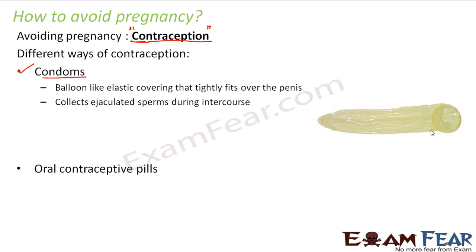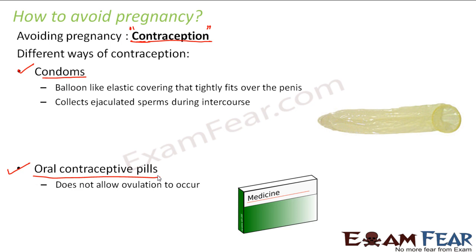The next way is the use of oral contraceptive pills. These tablets are taken daily by the female and they do not allow ovulation to occur — that is, the release of the egg from the ovary is prevented. With no egg released, even if sperm enters the body there is nothing to fertilize, so no fertilization and no pregnancy. However, these pills do have some side effects in the long run and should be taken only after consulting a doctor.